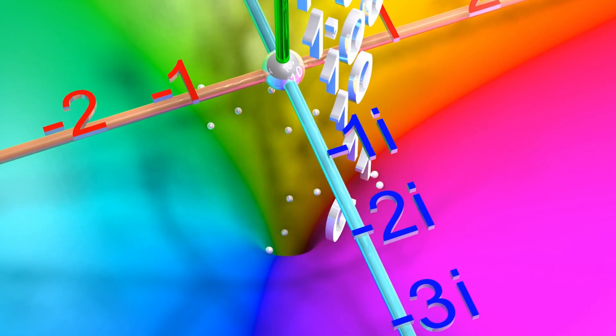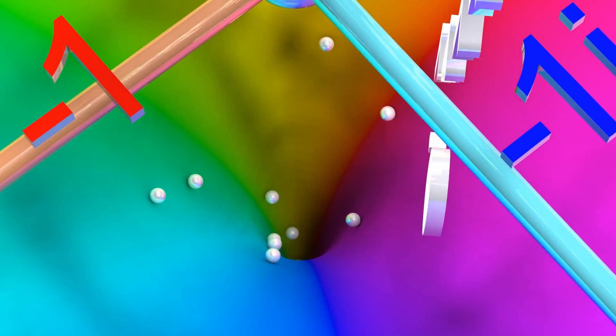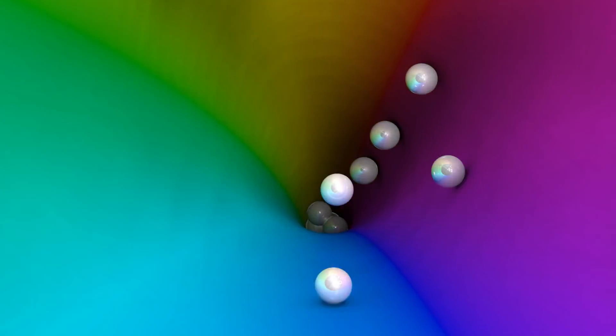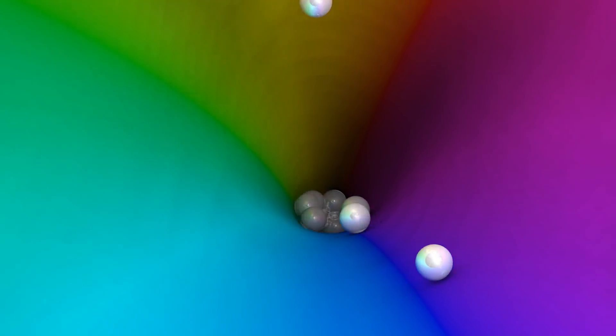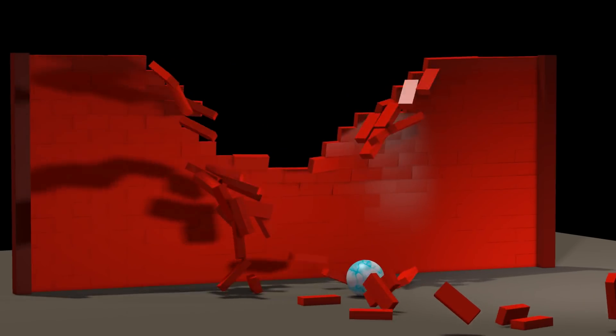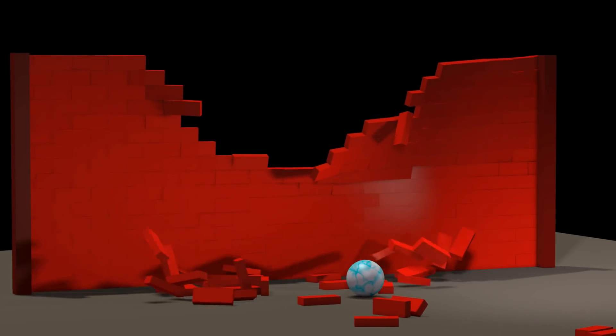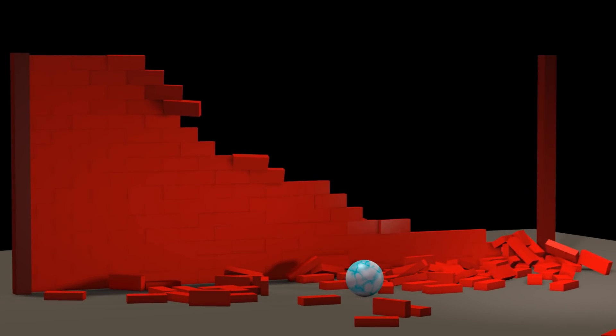Once you have your objects in your animation program, there are many different ways to animate them. One fun way is to run a physics simulation program. There are a variety of physics simulation programs available, each with their strengths and weaknesses.